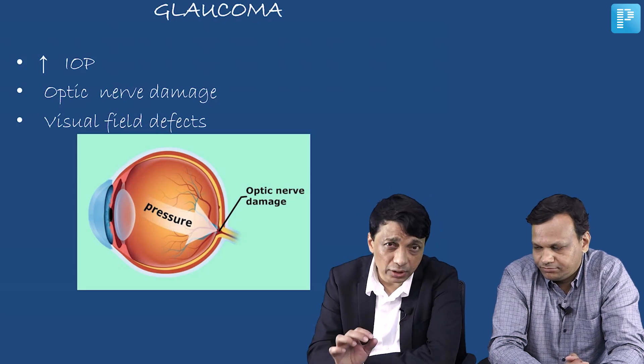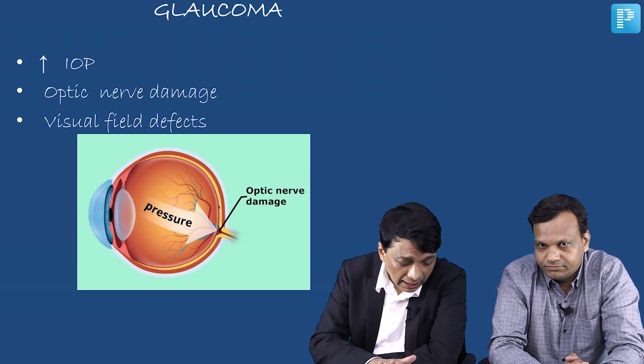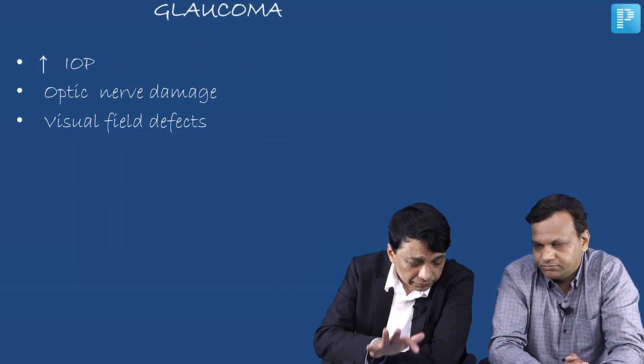So this is the definition — we need two out of three. Now, what are the predisposing conditions of glaucoma? We should know amongst our friends and relatives who of them are going to develop glaucoma.